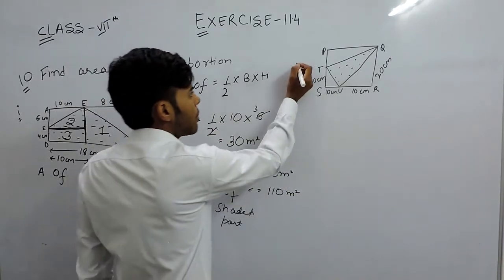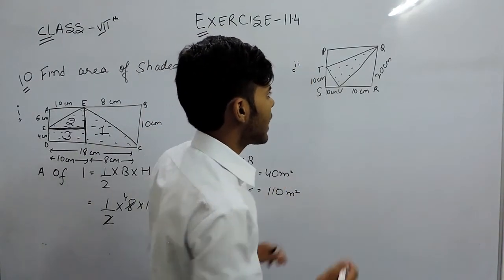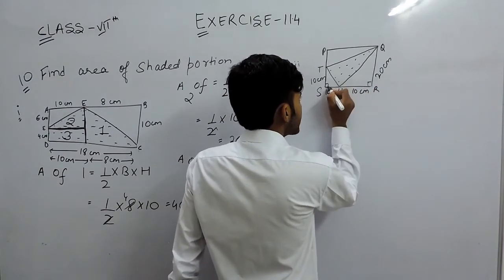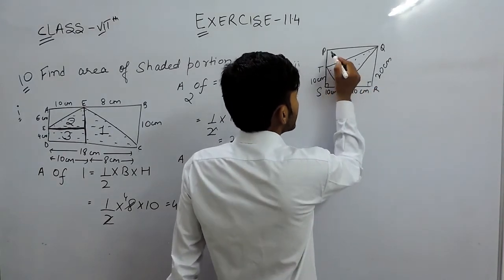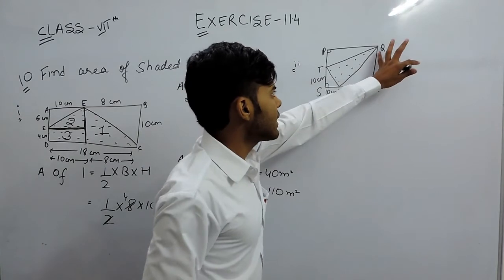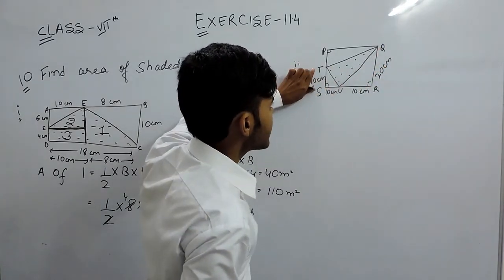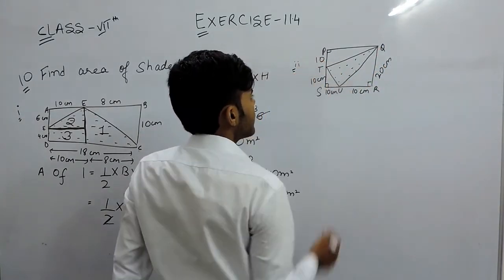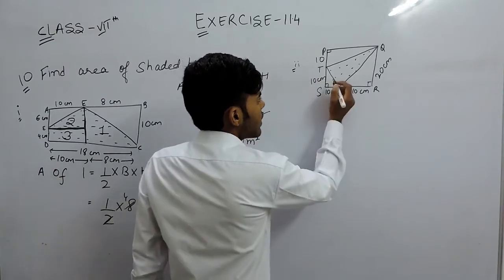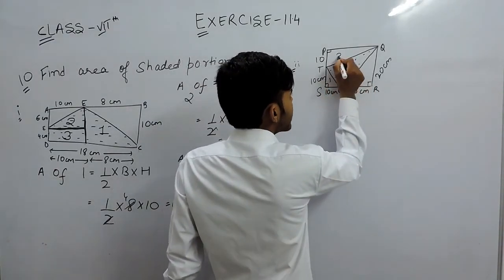Now part 2. In part 2, you can see that this is triangle 1, this is triangle 2, and this is triangle 3. This side is 20 centimeters, this is 10, so this will also be 10 centimeters. Now let us name the figures — this is 1, 2, and this is 3.